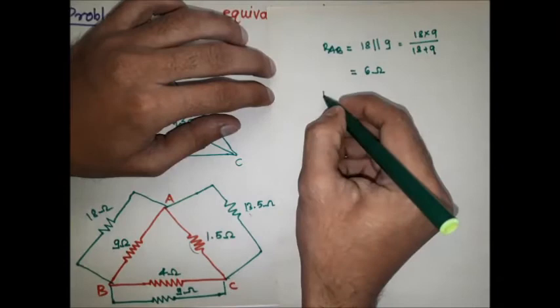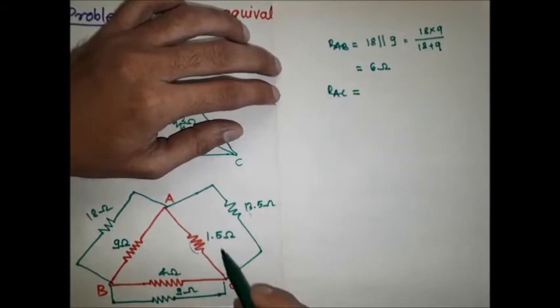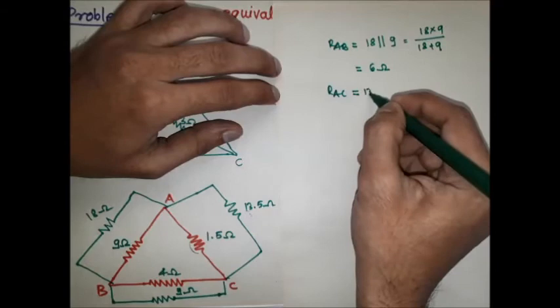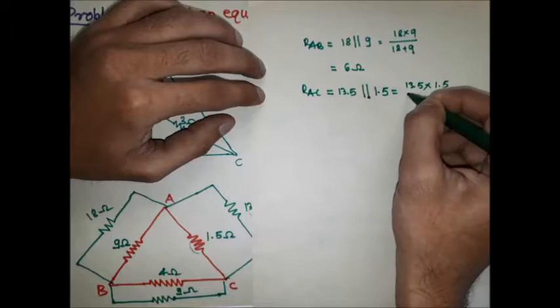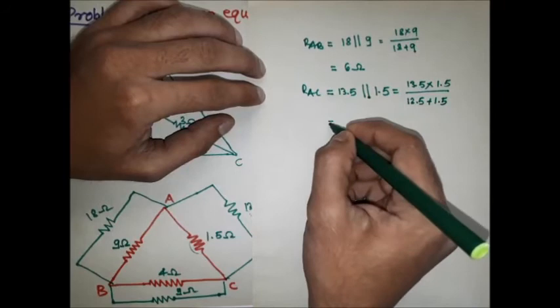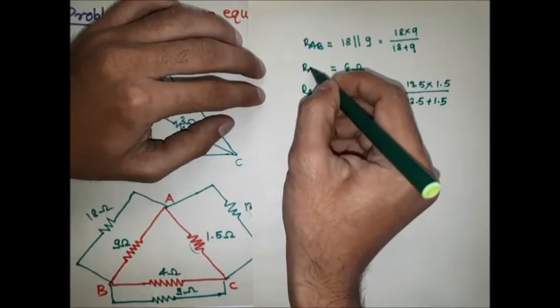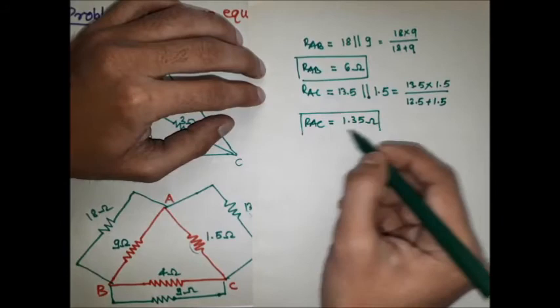For the AC branch, two resistances are in parallel: 13.5 ohm and 1.5 ohm. So RAC = 13.5 ║ 1.5 = (13.5 × 1.5) / (13.5 + 1.5) = 1.35 ohm. So RAB = 6 ohm and RAC = 1.35 ohm.